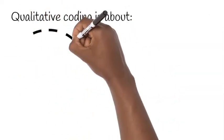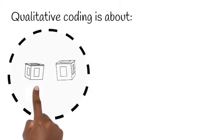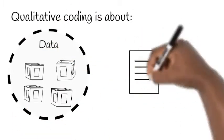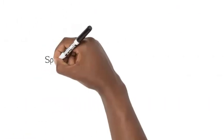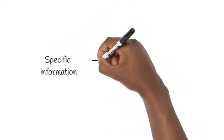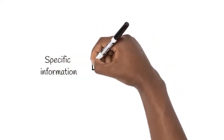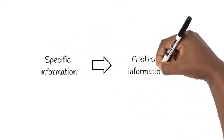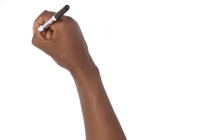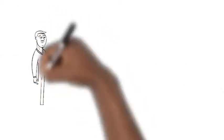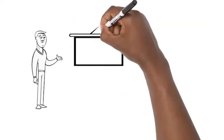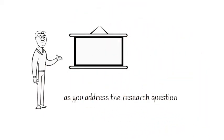Qualitative coding is all about data summary. You are trying to summarize the data, moving from specific information participants have given to you into abstract information so that you can present that information to your audience and also address your research question.